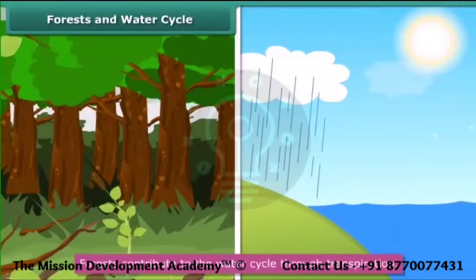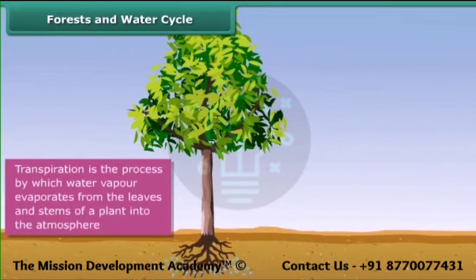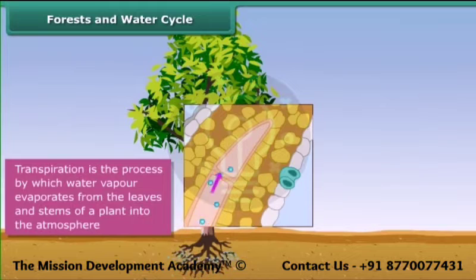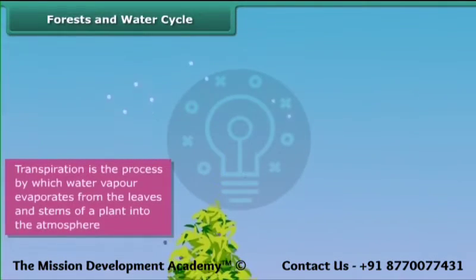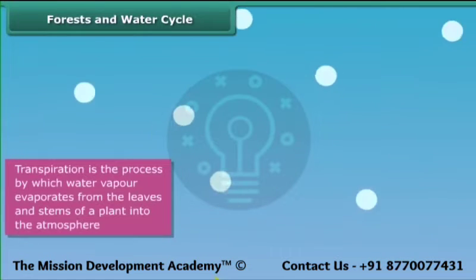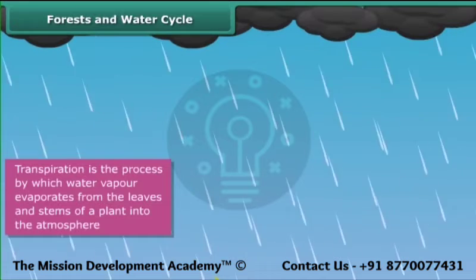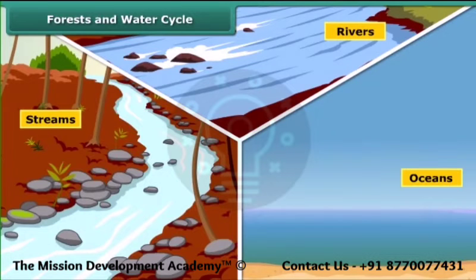Forests play an important role in the water cycle as well. They contribute to it through transpiration. Transpiration is the process by which water vapour evaporates from the leaves and stems of a plant into the atmosphere. It then rises up in the air, and when it comes in contact with a cooler surface, it condenses and forms clouds. When the water droplets in the clouds become heavy, they fall down as rain. The rainwater flows into streams, rivers and oceans, thereby completing the water cycle.